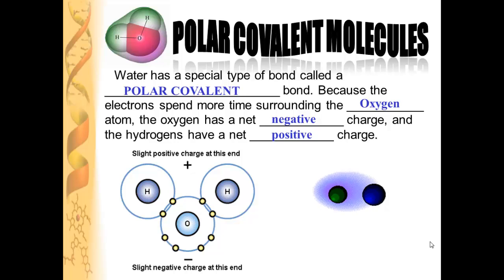Water molecules are what we call polar covalent. And if you see in this animation here, the electrons are spending more time around one atom than the other. This is a polar covalent bond — it's when electrons are shared unequally. You'll notice that the electron here is being shared between the hydrogen and the oxygen atoms, and those electrons are being shared unequally, closer to the oxygen atom than to the hydrogen atom.